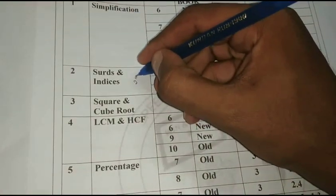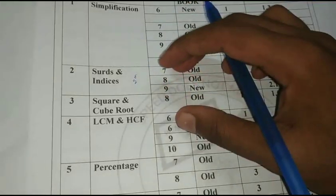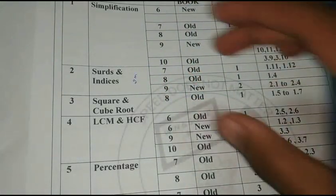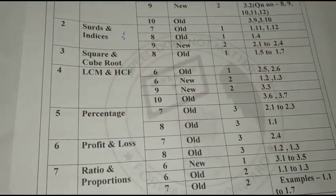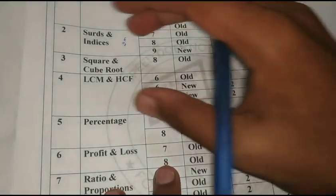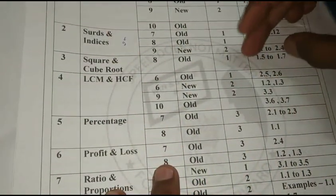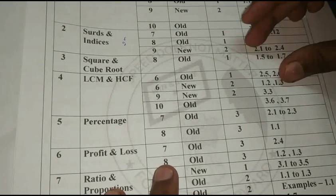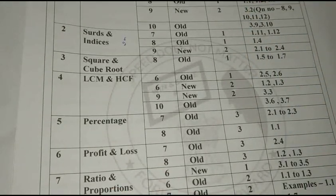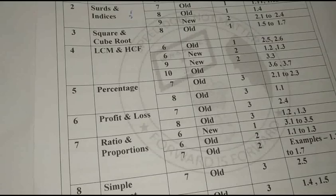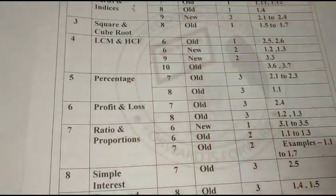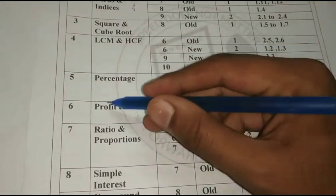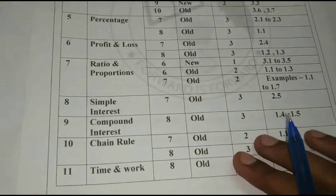You can use 2m and 2n for Surds and Indices. Then square and cube roots — these are very important topics. LCM and HCF are also very important. The percentage topic, profit and loss, ratio and proportion, and simple interest are all key maths topics to cover.